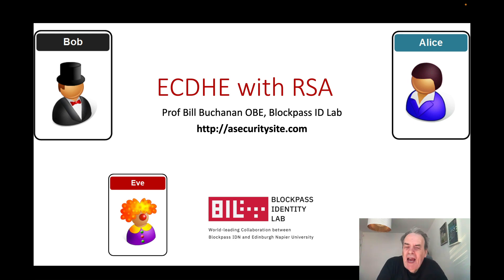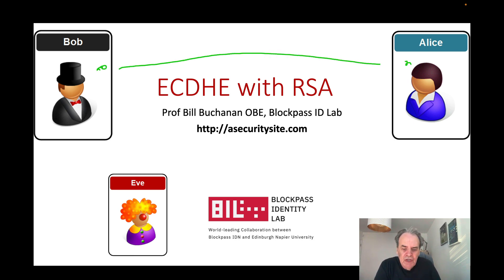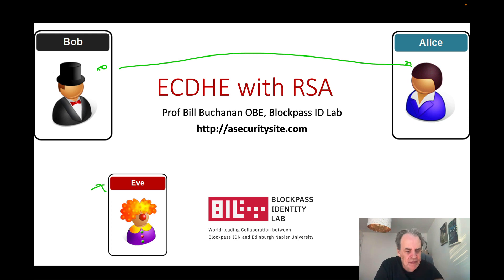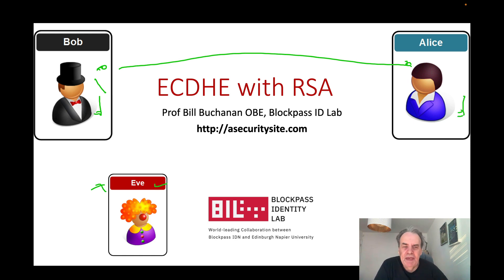Let's look at how Bob and Alice can create a secure tunnel between themselves, and for Eve not to be able to view any of the contents of the data inside that tunnel. For this we typically need what's called a key exchange method — this is where Bob and Alice can create the same encryption key without Eve being able to discover what that key is.